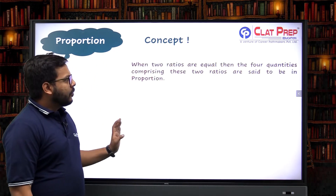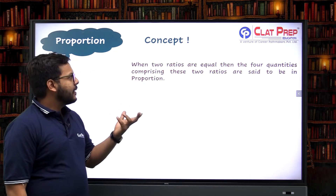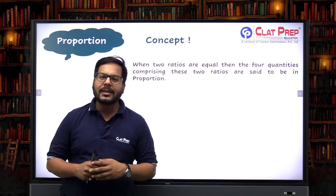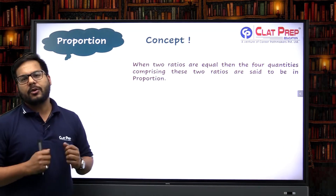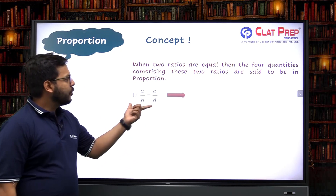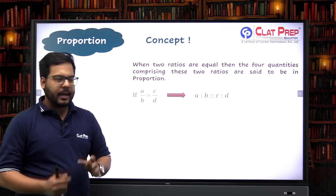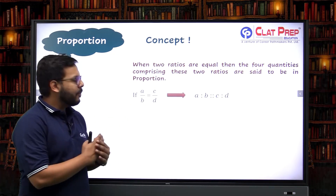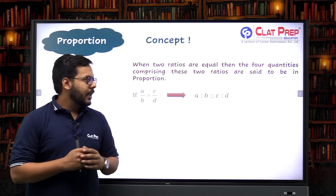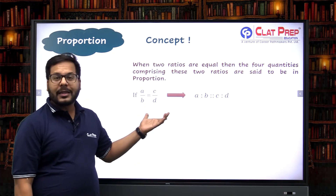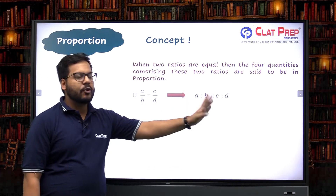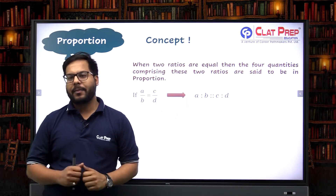Proportion says that when two ratios are equal, then the four quantities comprising these two ratios are said to be in proportion. If we have two ratios equal — that is, if a upon b is equal to c upon d — then the four quantities a, b, c and d are said to be in proportion.